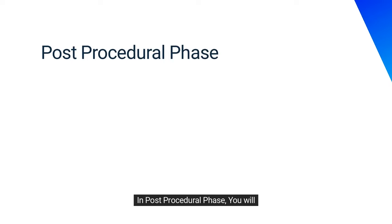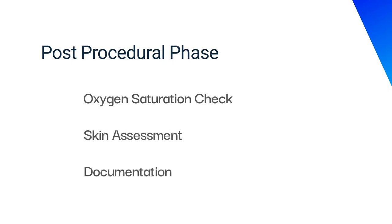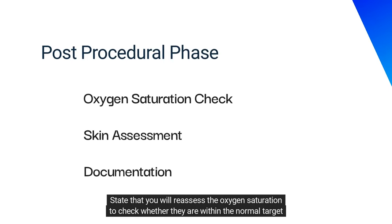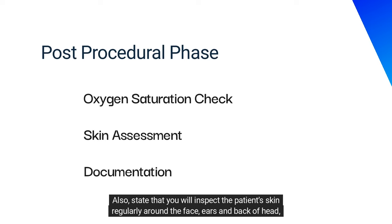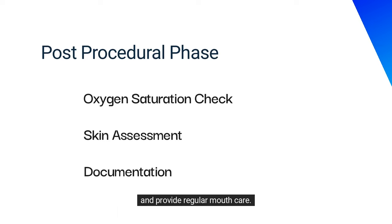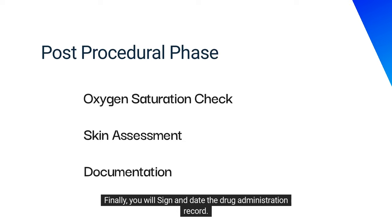In the post-procedural phase, state that you will reassess the oxygen saturation to check whether it is within the normal target range of 94 to 98%, escalating if this is not achieved. Also state that you will inspect the patient's skin regularly around the face, ears and back of head, and provide regular mouth care. Finally, sign and date the drug administration record.